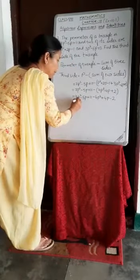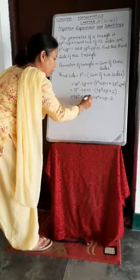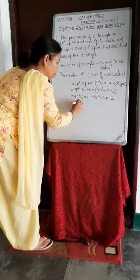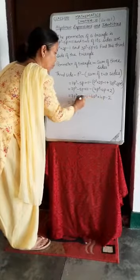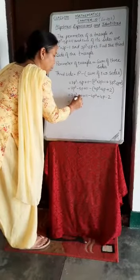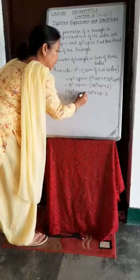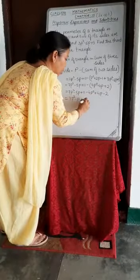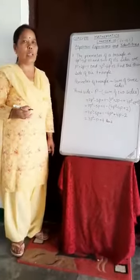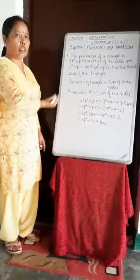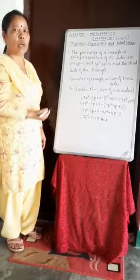This equals 7P² minus 4P², which are like terms: 7 minus 4 is 3P². Then minus 5P plus 4P: minus plus is minus, so 5 minus 4 is 1, giving minus P. And 11 minus 2 gives plus 9. So the third side is 3P² minus P plus 9. I hope you have understood addition and subtraction of algebraic expressions and can now solve exercise 10.1.